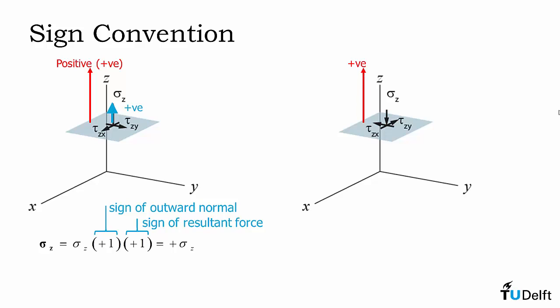On the right we have a positive outward normal direction but our resultant is in the negative direction. So in this case sigma z would be negative.